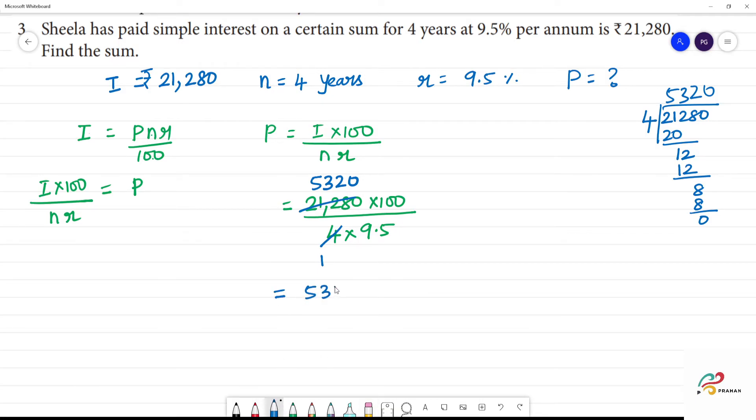So 5,320 into 100 divided by 9.5. Now we will multiply by 10 and multiply by 10. So we will get 5,320 into 100 into 10 divided by 95.